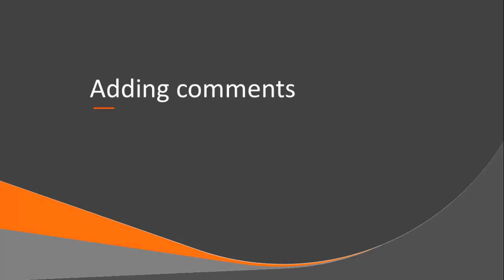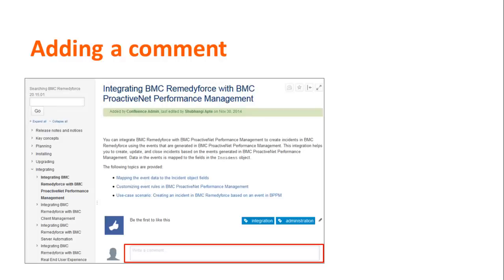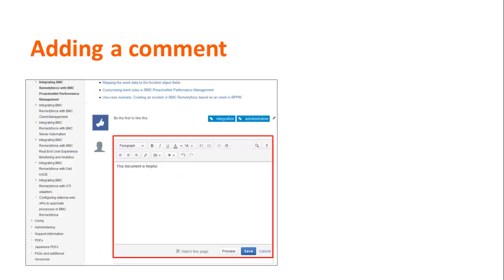To provide feedback about a topic to the BMC documentation team, you can add a comment to that page. To add a comment, you must log on using your BMC support logon credentials. If you are accessing the content from the application, copy the URL of the page, close the browser, open another browser, and paste the URL into the address line. Then log on with your BMC support credentials. In the write a comment text box at the bottom of a page, type your feedback and click save. We recommend that you watch pages that you add comments to. When you watch a page, you will receive an email notification whenever another user adds a comment to the page or updates it.